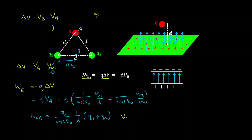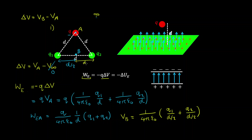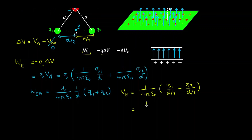Let's calculate VB. That's equal to 1 over 4π epsilon-zero multiplied by Q1 over D/2 plus Q2 over D/2, where D/2 is the distance between point B and both of those charges. Simplifying further, we have 1 over 4π epsilon-zero times 1 over D, and this time we have 2Q1 plus 2Q2.